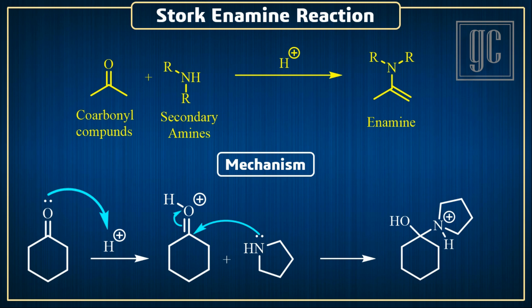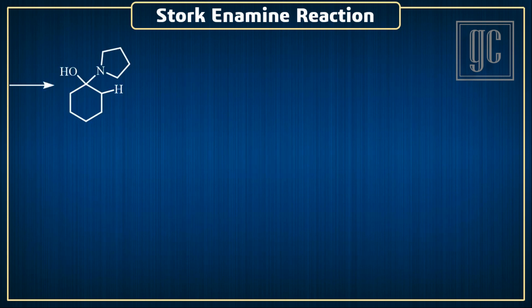An intermediate is formed in which nitrogen carries a positive charge due to its tetravalent structure. One proton is then eliminated to form an uncharged alpha-hydroxy amine. In this molecule, the carbon is attached to two highly electronegative atoms — nitrogen and oxygen. Thus, this molecule undergoes beta elimination, where the hydroxyl group and one proton leave as a water molecule.